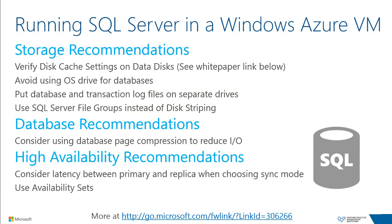Now let's talk about general best practices for running Windows Azure Virtual Machines, starting with storage — arguably one of the most important aspects to any SQL Server. First, verify your disk cache settings for your SQL deployment. There's a great white paper on using disk cache with SQL Server Virtual Machines in Windows Azure. Since writes with SQL Server are always flagged with write-through, writes always go directly to Windows Azure storage. If your workload demands a high rate of random IO, such as an OLTP workload, the general guideline is to keep the cache set to the default value of None, which provides the highest IO rate because Windows Azure storage is capable of more IOPS than a local disk.